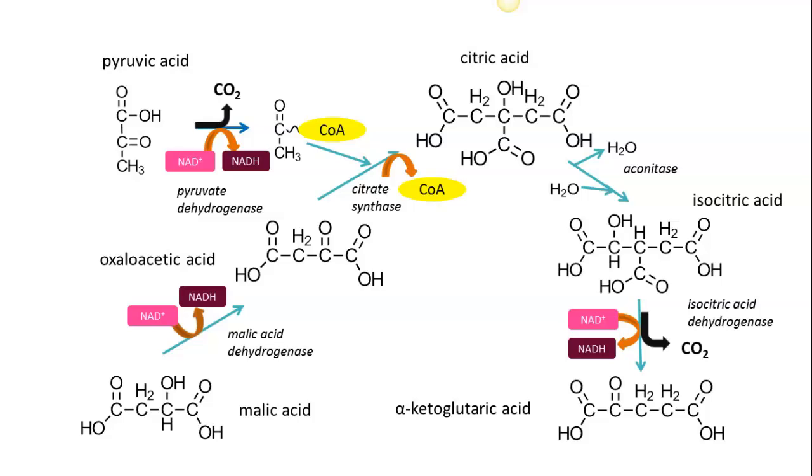We call this the citric acid cycle or the Krebs cycle. Krebs cycle because he was the one who first discovered it. Citric acid cycle because citric acid is the first stable intermediate. But you can see it as a cycle because we started out with a molecule and we came back to that original molecule. What we did do is we generated carbon dioxide which was released off, and we generated NADH and FADH2. The NADH and the FADH2 then are going to go into the electron transport system.